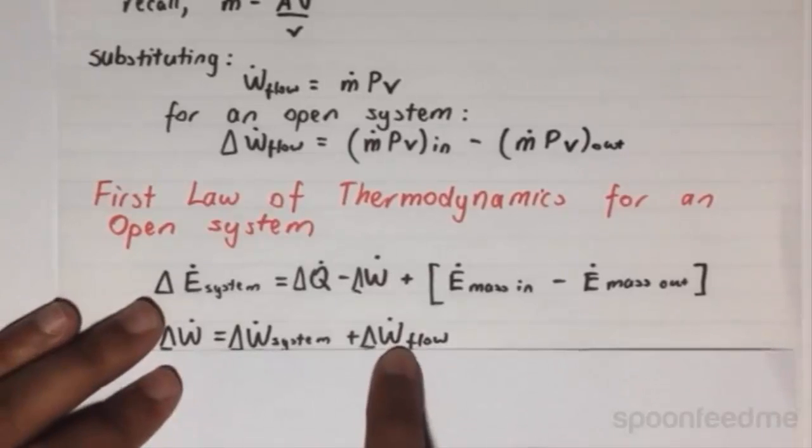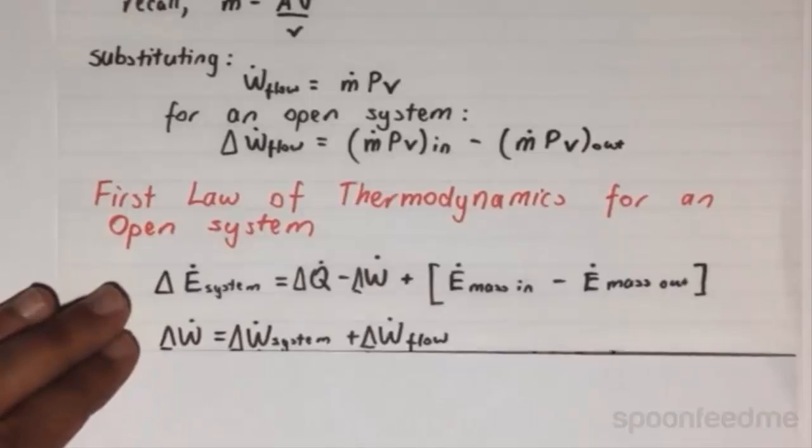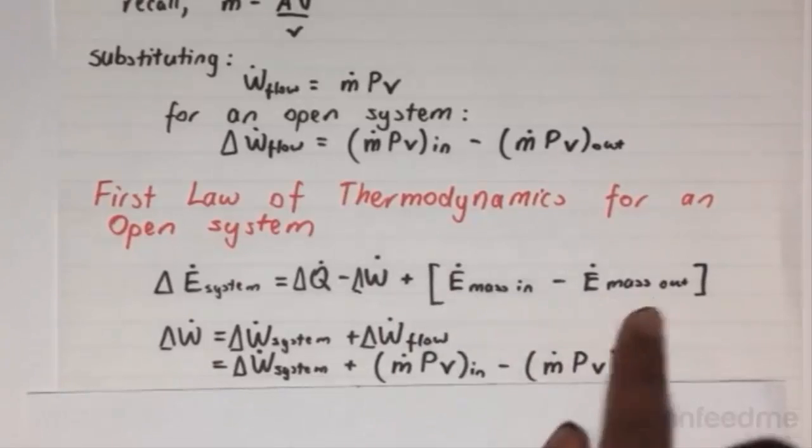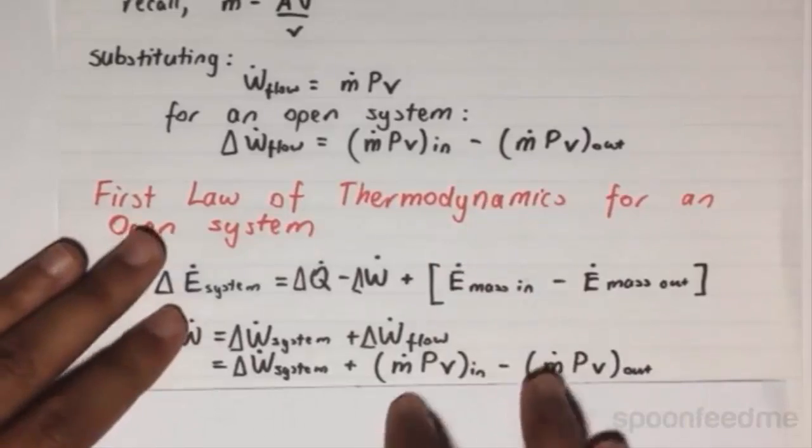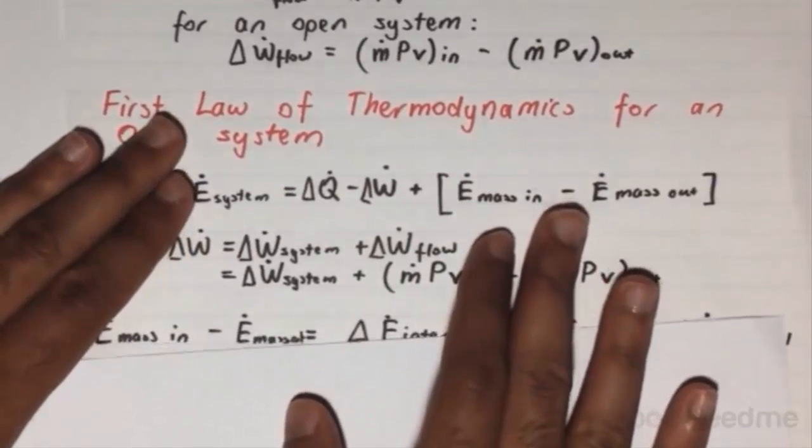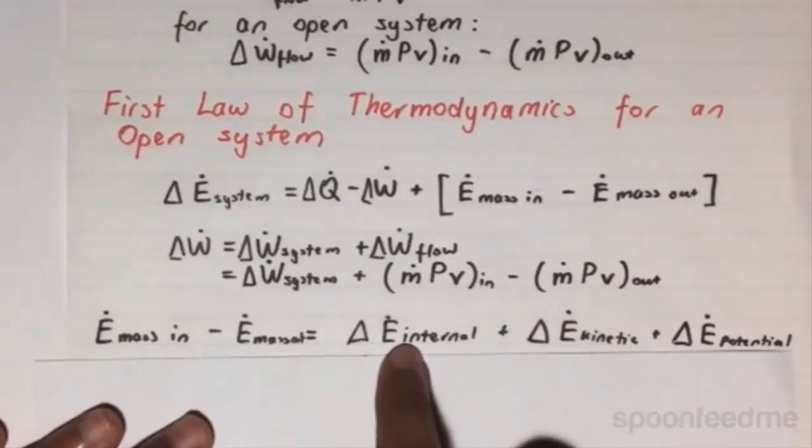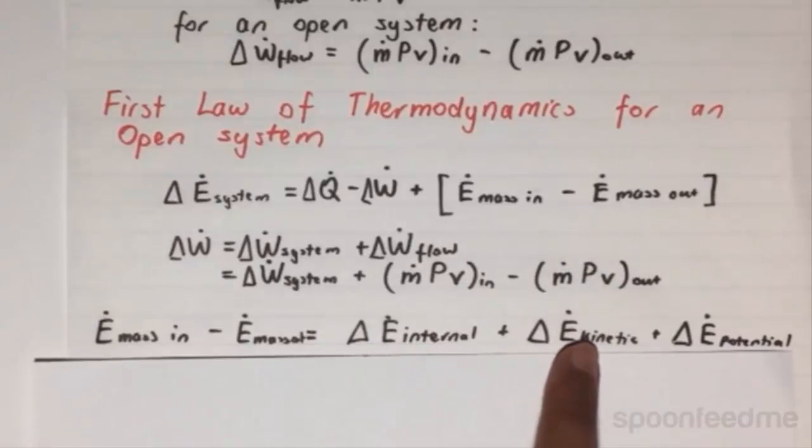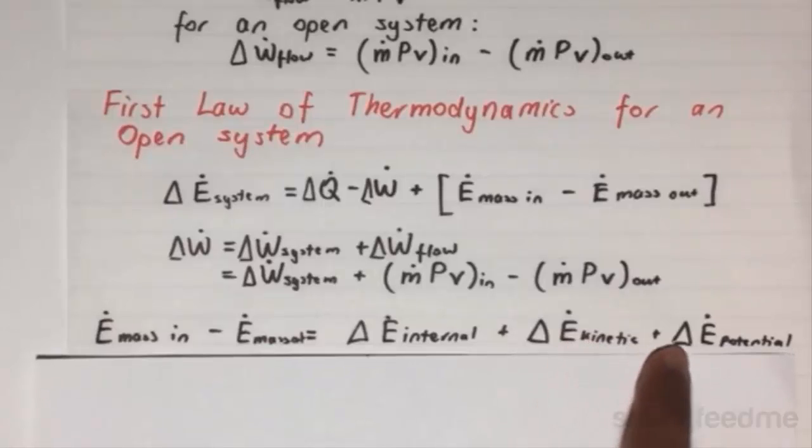We just calculated this quantity, so this can be replaced by this quantity over here. What about the change of the energy dot of the mass flow rate of the system? From fundamental physics once again, this is equal to the change in internal energy plus the change in the kinetic energy, and finally added to the change in the potential energy.